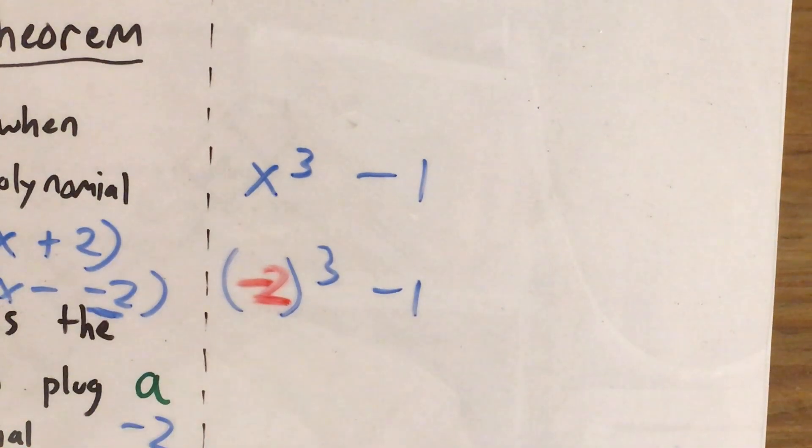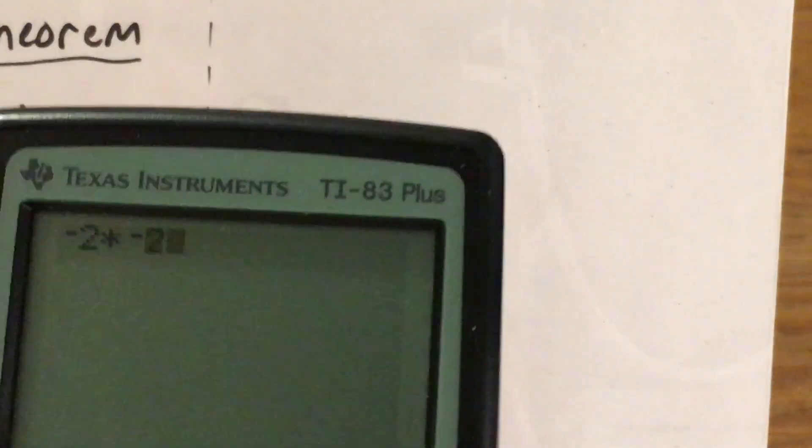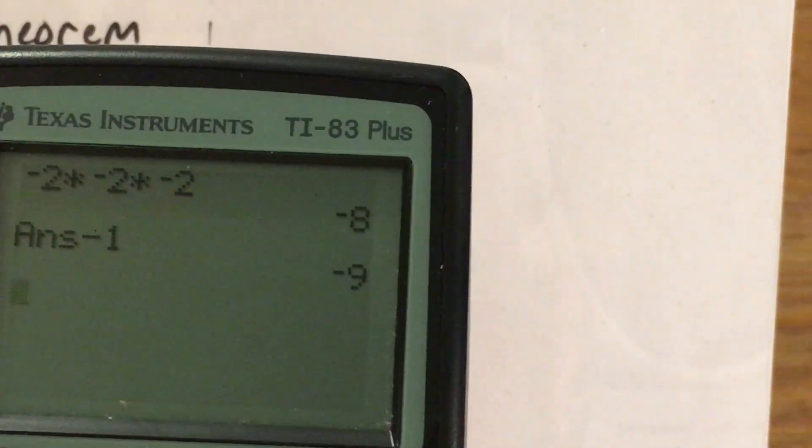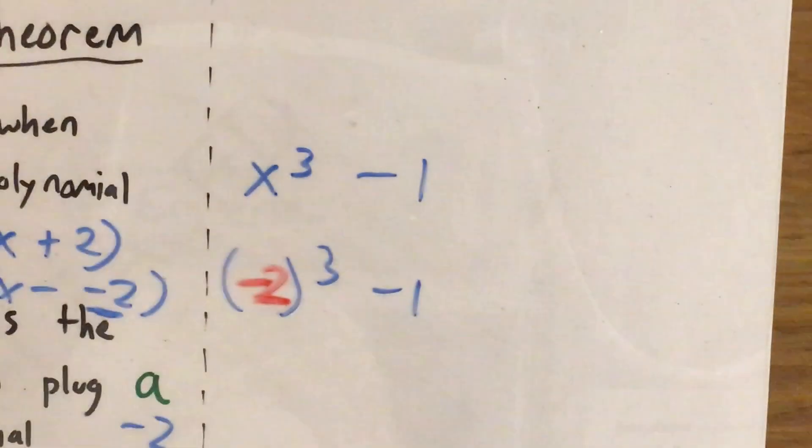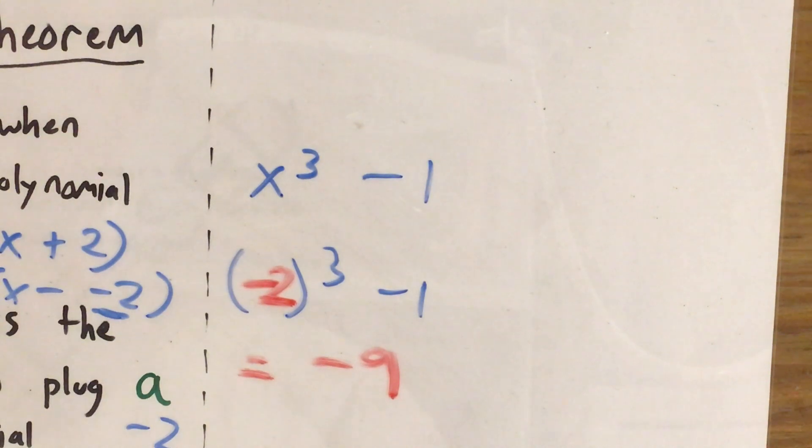Negative 2 cubed is also known as negative 2 times negative 2 times negative 2. So let me go ahead and calculate negative 2 times negative 2 times negative 2 in my calculator, I get negative 8. Subtract 1 from that and it gives me negative 9.